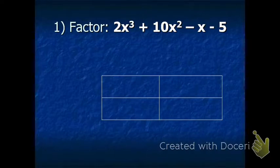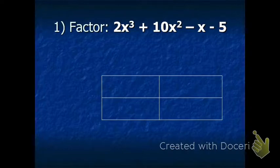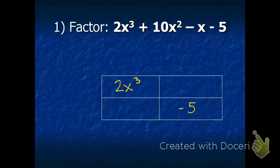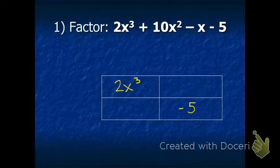The first problem says factor: 2x to the third plus 10x squared minus x minus 5. You see the box down there — two rows and two columns. The rule is that the first term has to go in the top left box, and the last term has to go in the bottom right box. The second term, positive 10x squared, can go in either the top right or bottom left, and the negative x goes in the other one. So I put plus 10x squared in the top right and negative x in the bottom left.